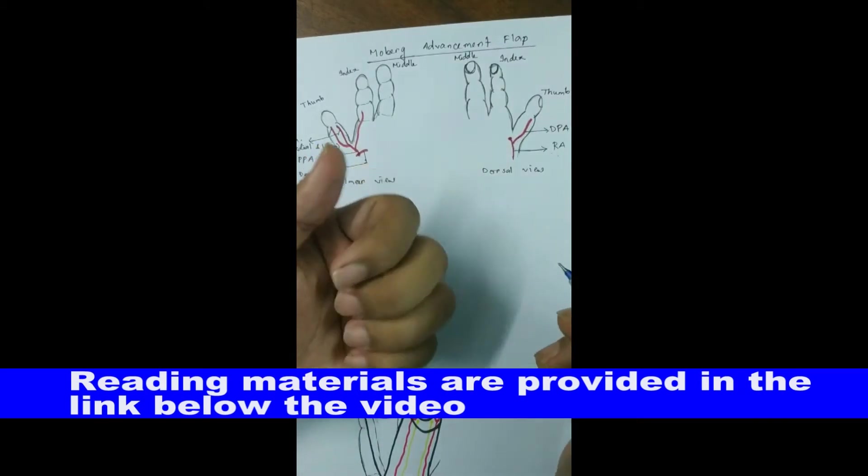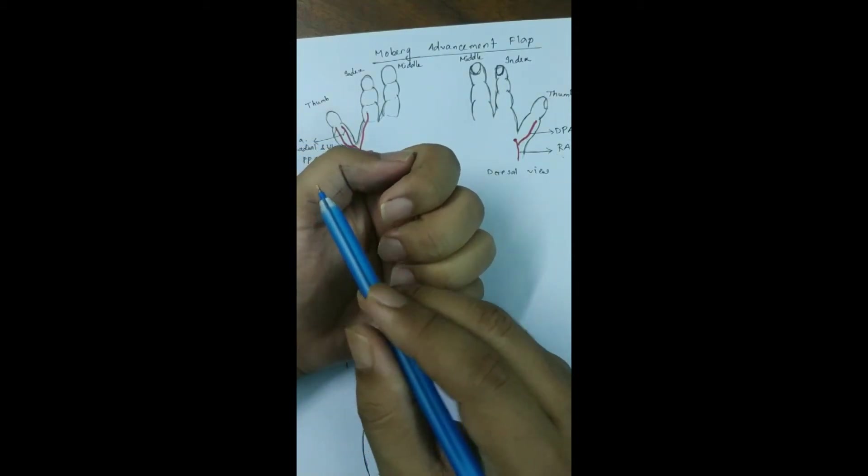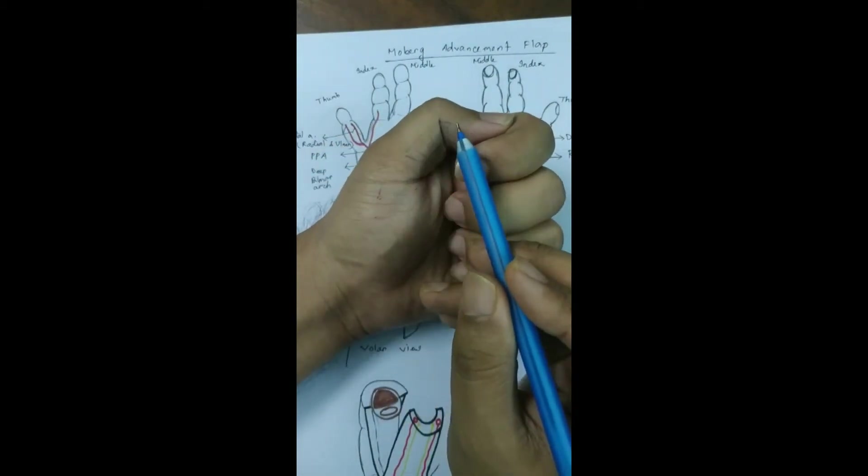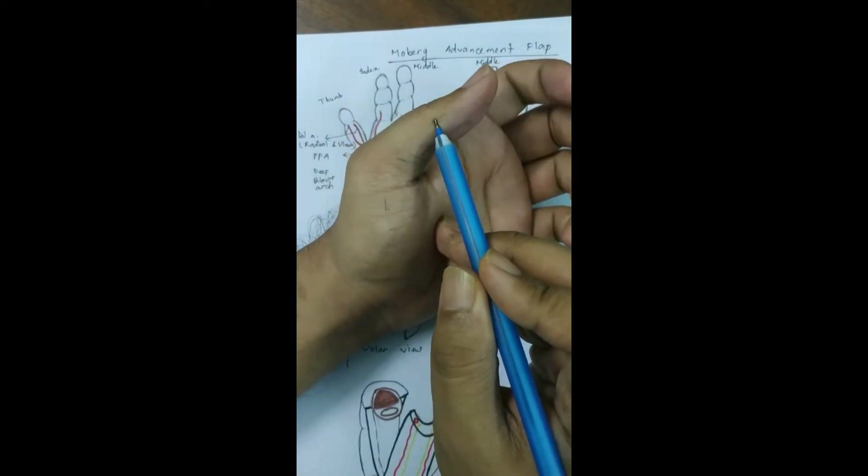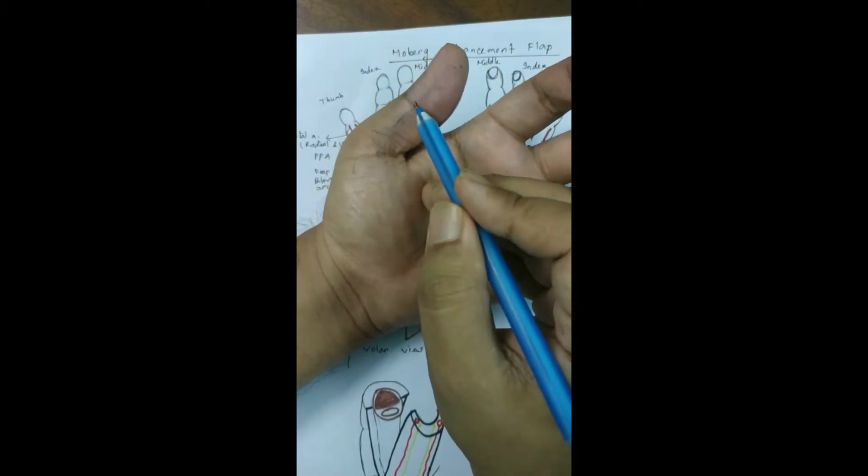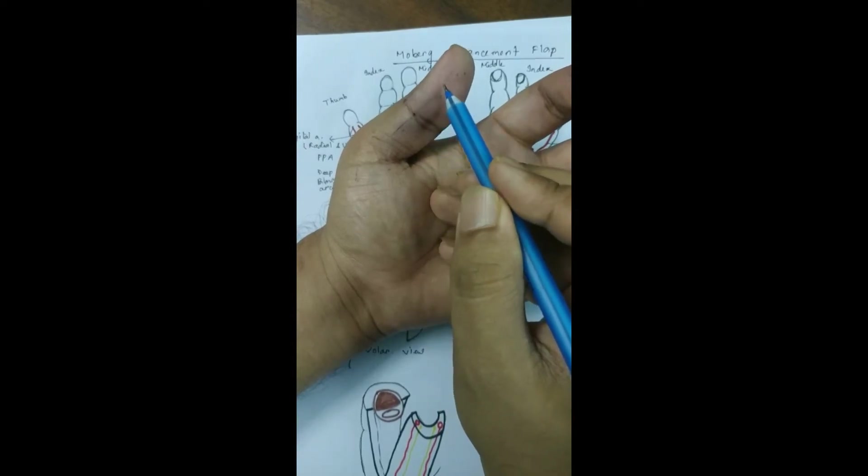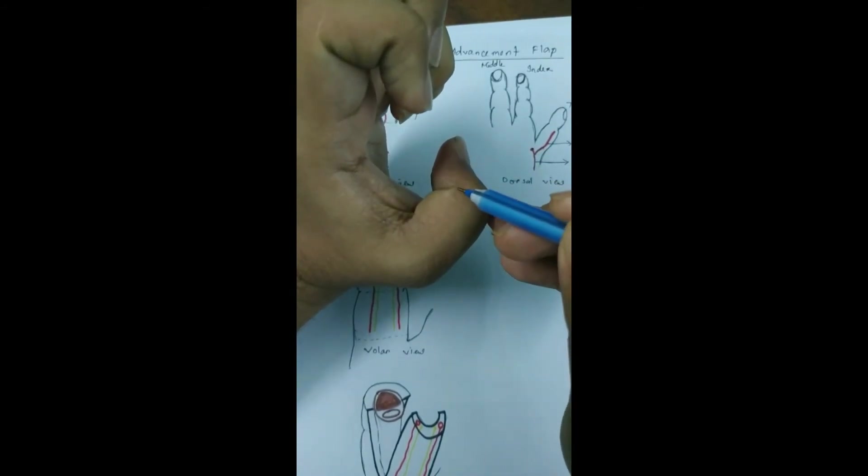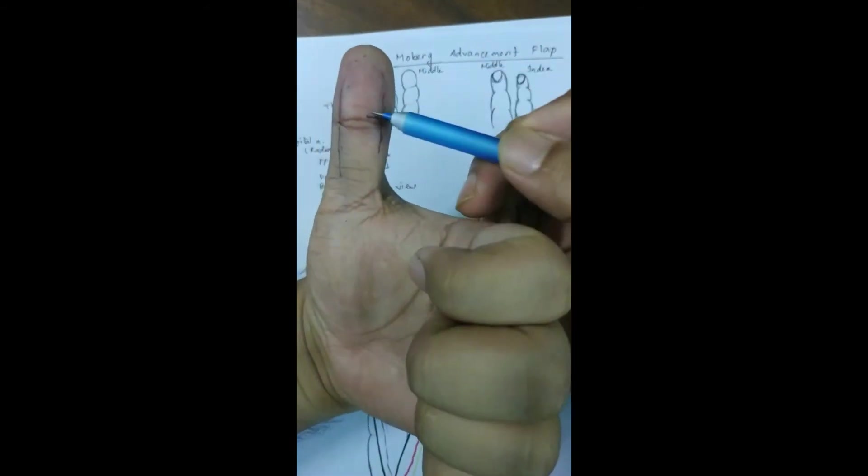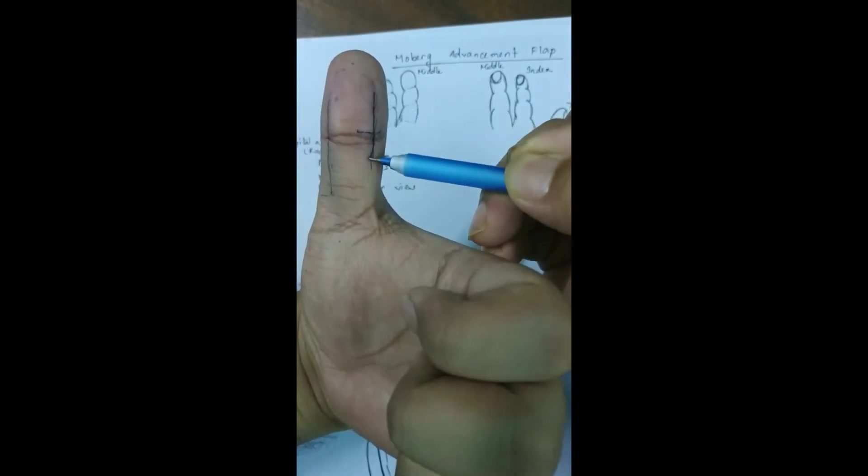Another feature is that the position of the digital artery is 0.5 centimeter volar to the mid-axial line. When we flex the thumb, the tip of the crease is the mid-axial line. So approximately the digital artery should be here on the radial side and on the ulnar side.